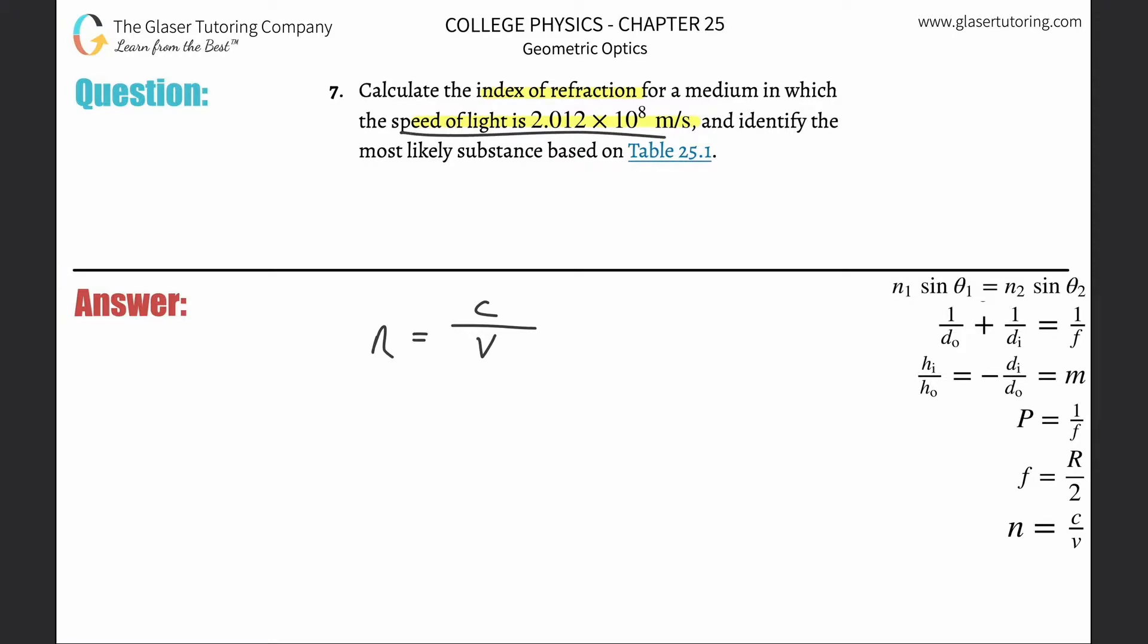Now they're telling us the speed of light, and it's in a certain medium. Obviously, this is not the speed of light in a vacuum. Speed of light in a vacuum is about 3 times 10 to the 8.